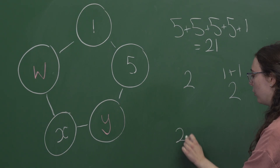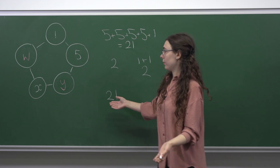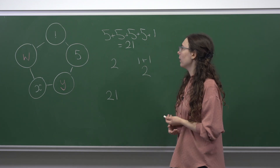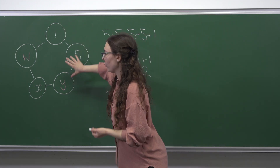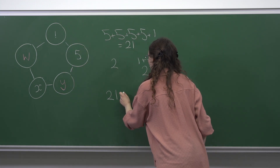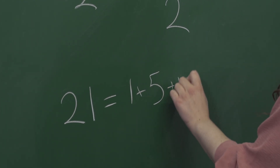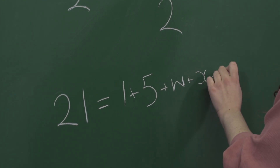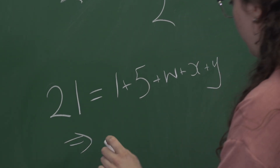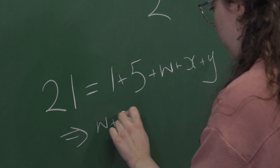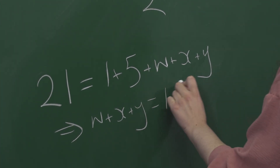Let's also think about how we're going to get 21. Since 21 is the largest of our 21 numbers, the only way to get it is as the sum of all 5 numbers. So 21 equals 1 plus 5 plus w plus x plus y, which implies that w plus x plus y equals 15.